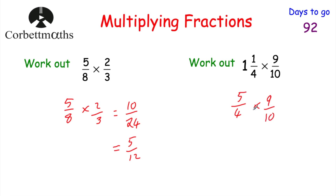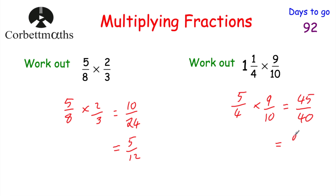So we've got 5 quarters multiplied by 9 tenths. We now just need to multiply the numerators and multiply the denominators. So 5 times 9 is equal to 45, and 4 times 10 is equal to 40. Now if we have a look here, this is top-heavy and it can be cancelled down. Both of these numbers are divisible by 5, so let's divide both of them by 5. 45 divided by 5 is 9, and 40 divided by 5 is 8. So that would be 9 eighths.